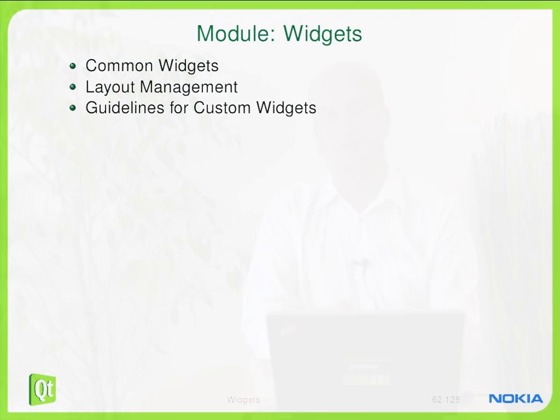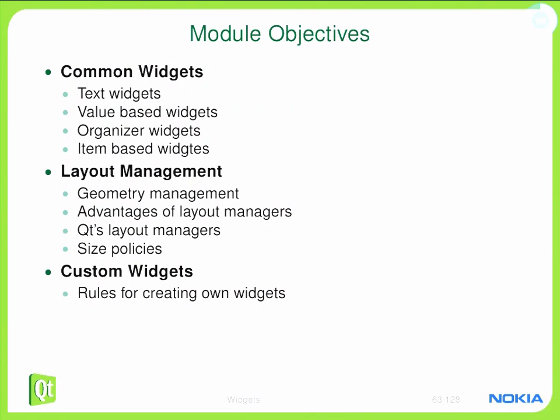Let's start with widgets. Widgets are objects which have a visual representation — those controls that the user can use to interact with your application. Qt has a wide range of widgets: text widgets for reading and editing text, value-based widgets to display values, button widgets, organizer widgets, and item-based widgets.